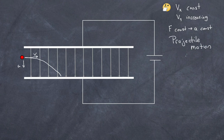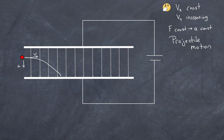Projectile motion is not simply something in the domain of gravitational fields. It applies to any case where acceleration in one direction is constant and there is no acceleration perpendicular to it. Let's now look at this situation with some numbers.